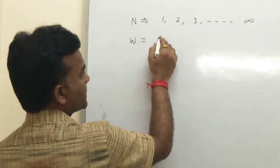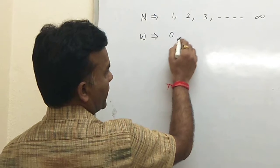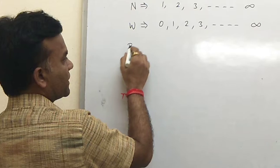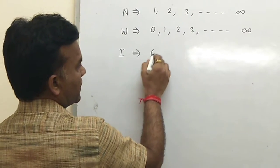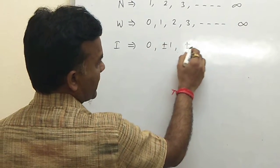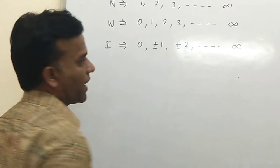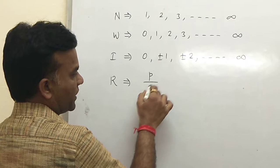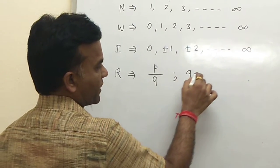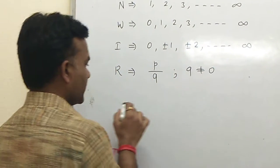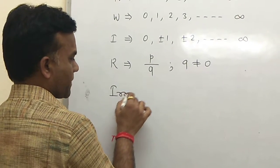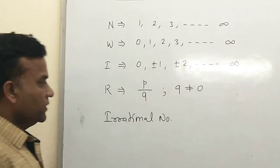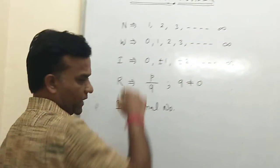Then whole numbers include 0 along with natural numbers. Then integers means all whole numbers written with plus and minus signs. Then rational numbers, which means you write a number in the form of p by q where q is not equal to 0. Then irrational numbers.